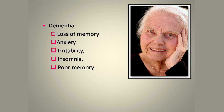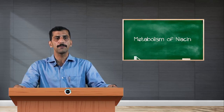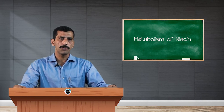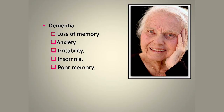Niacin can also be produced from the amino acid tryptophan, although it requires a very large amount of tryptophan to synthesize niacin — 60 milligrams of tryptophan synthesizes only 1 milligram of niacin. Since tryptophan is an essential amino acid, it is more efficient to supply niacin directly rather than producing it from tryptophan, thereby saving tryptophan for other functions such as body protein synthesis.